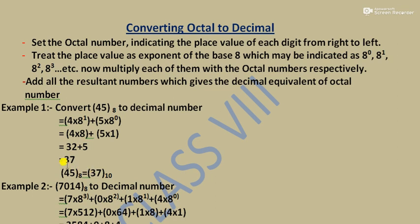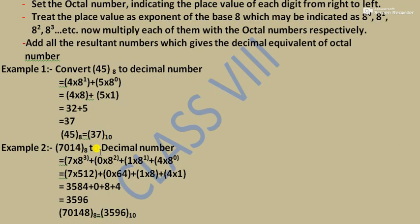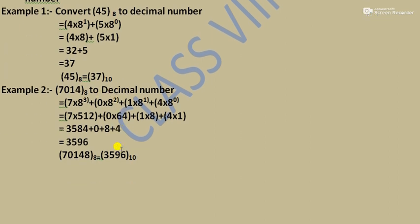This way we convert the octal number to its decimal equivalent — the answer is 37. One more example: the octal number is 7014, which we will also convert to a decimal number.